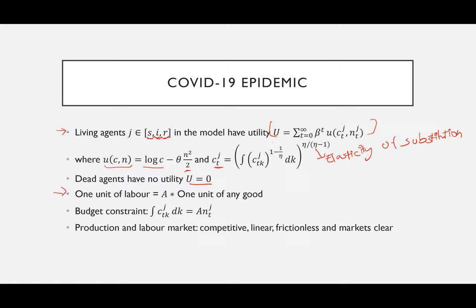One equation they wrote is that one unit of labor is equal to some value 'a' times one unit of any good. We can then write the budget constraint as the integral from zero to one of c_j_t(k) dk equals a times n_j_t. The paper also assumes that production and labor markets are competitive, linear, and frictionless, and that these markets clear.